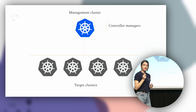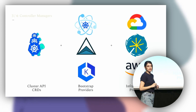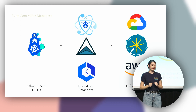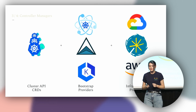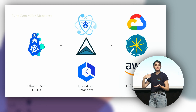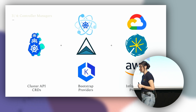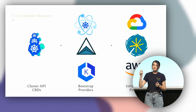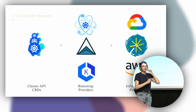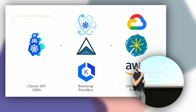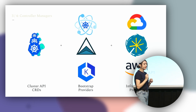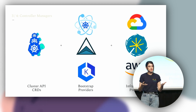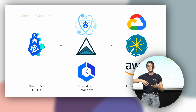Once we have our management cluster, we require the dependencies installed on top of it. Currently there are three sets of dependencies: the Cluster API CRDs (custom resource definitions), the bootstrap provider, and the infrastructure provider. Cluster API introduces five new custom resource definitions, and we require a controller to ensure we can create, reconcile, and delete these resources programmatically. The second controller is the bootstrap provider — this component translates YAML configuration into cloud-init script and attaches the instance to the cluster as a node. This capability is currently supported by KubeADM, Talos, and recently EKS as well.